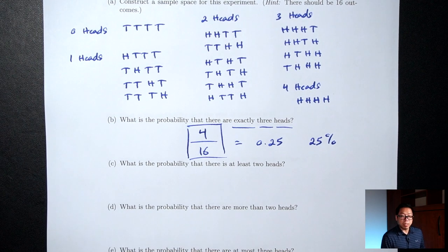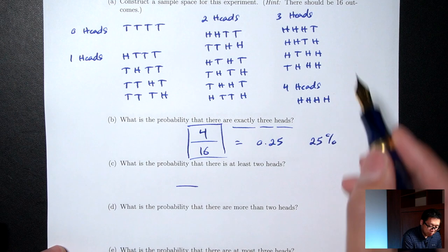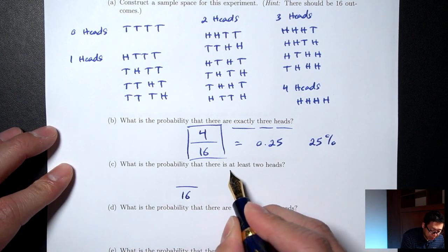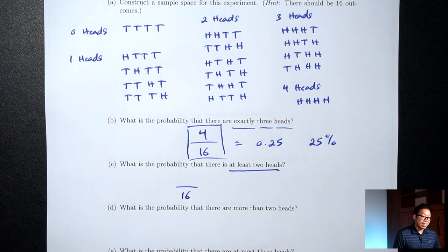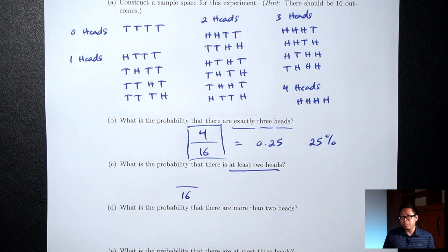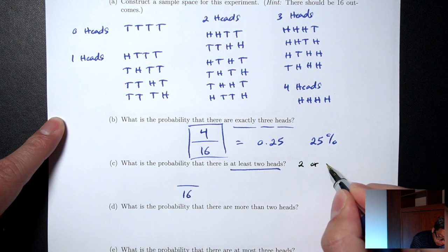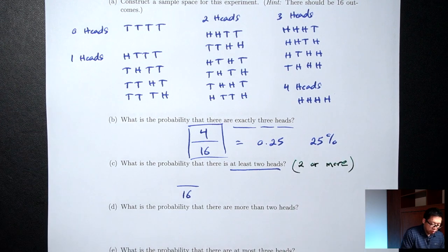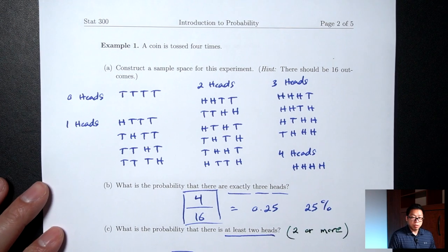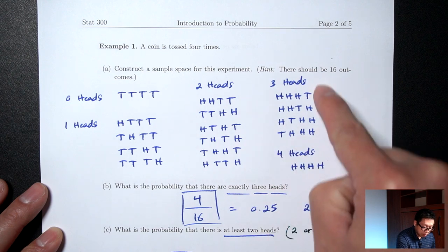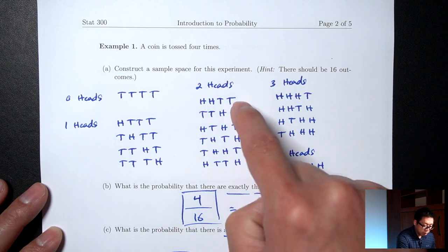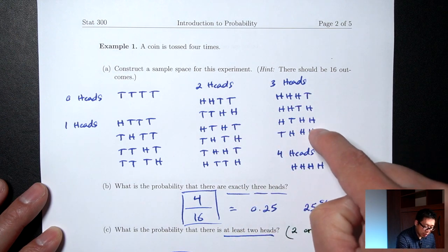Part C: What's the probability of at least two heads? The bottom is still 16. 'At least two' means two or more — just like 'at least 21 to purchase alcohol' means 21 or more. So we count all outcomes with two, three, or four heads: that's 6 + 4 + 1 = 11. So P(at least 2 heads) = 11/16.